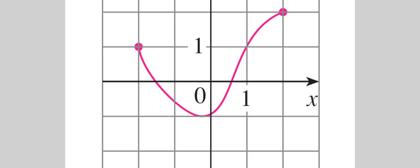And the range, we can see the lowest point on the graph appears to be negative 1, as far as the y-axis goes. And the highest point on the graph is 2. So the range of the function is from negative 1 to 2.